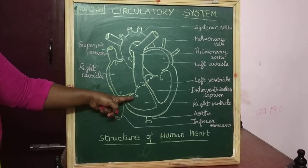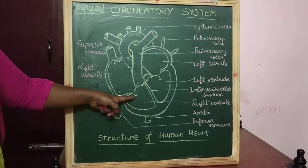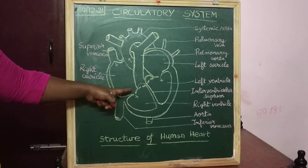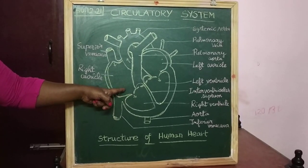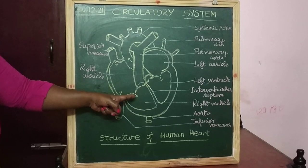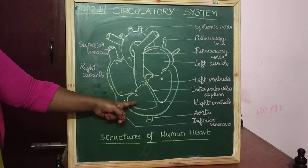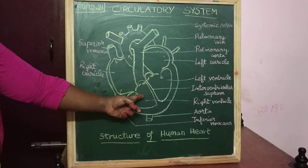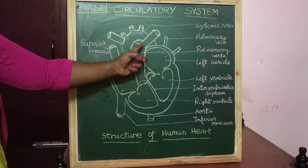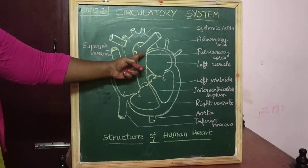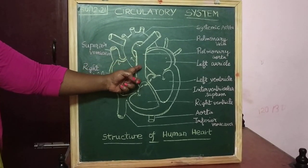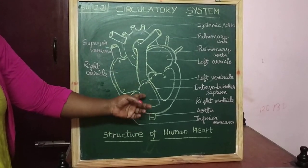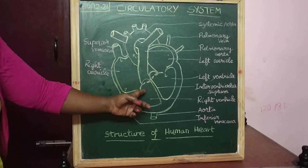This deoxygenated blood passes to the right ventricle through the right atrioventricular valve, called the tricuspid valve. It is a flap of connective tissue that opens in only one direction to prevent the backflow of blood. After it is filled, the right ventricle pumps the blood through the pulmonary arteries to the lungs.